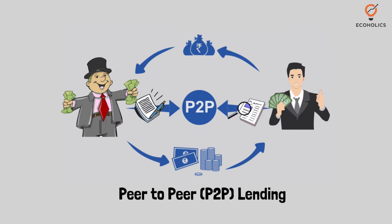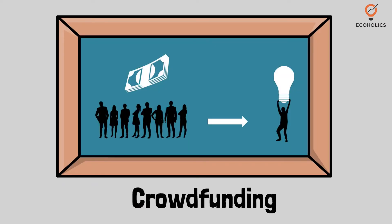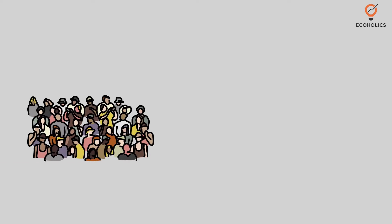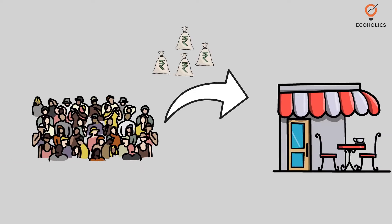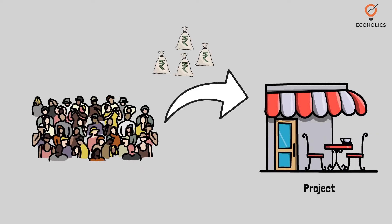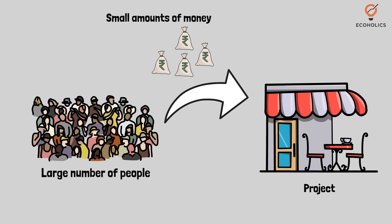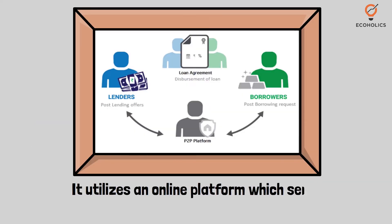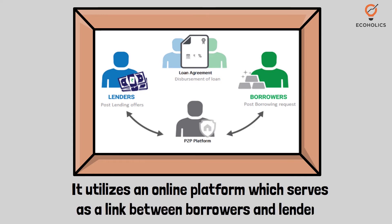Peer-to-peer lending is a form of crowdfunding used to raise unsecured loans which are repaid with interest. Crowdfunding refers to the financing of projects with small amounts of money raised from a large number of people. It utilizes an online platform which serves as a link between borrowers and lenders.